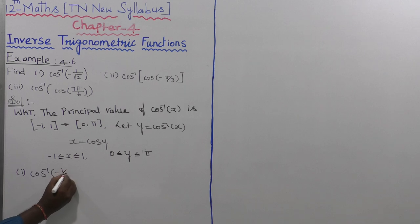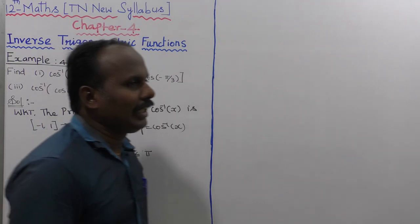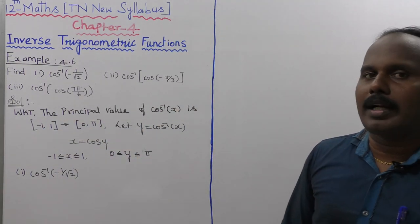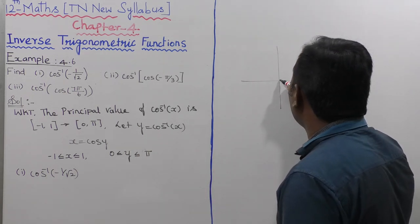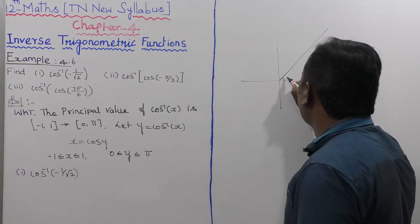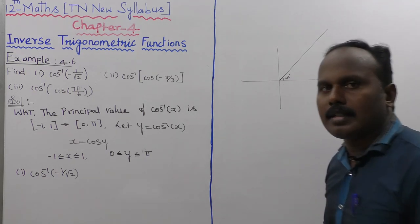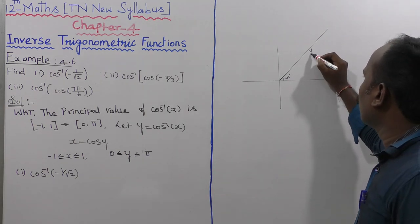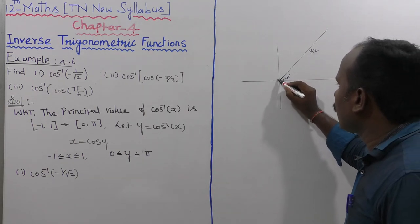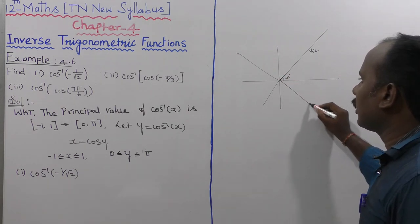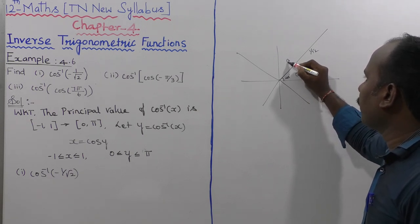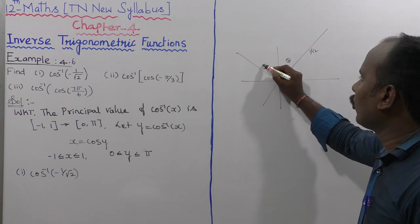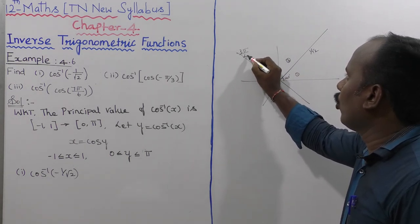The first subdivision: cos inverse of minus 1 by root 2. We need to find cos⁻¹(-1/√2). We know that cos θ = 1/√2 corresponds to θ = 45 degrees, which is π/4. Extending the angles on the unit circle: first π/4, second π/4, third is 3π/4.